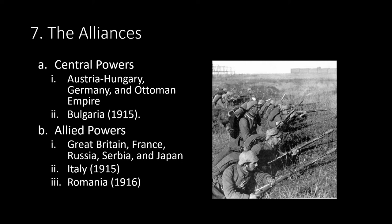Romania had been allied with the Central Powers since 1882. When the war began, it declared neutrality, arguing that because Austria-Hungary had itself declared war on Serbia, Romania was under no obligation to join. When the Entente Powers promised Romania large territories of Eastern Hungary, Transylvania, and Banat — which had a large Romanian population — in exchange for Romania declaring war on the Central Powers, the Romanian government ended its neutrality, and on August 27, 1916, the Romanian army launched an attack against Austria-Hungary with limited Russian support.